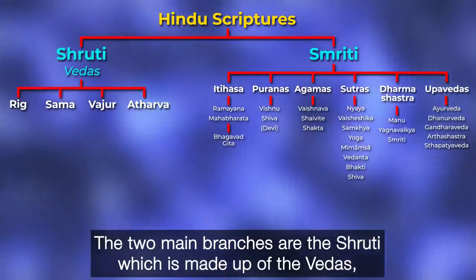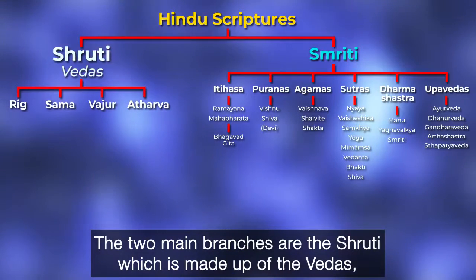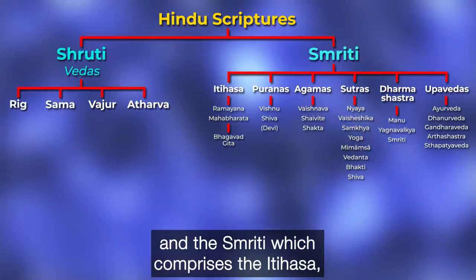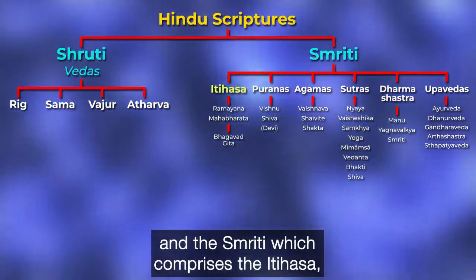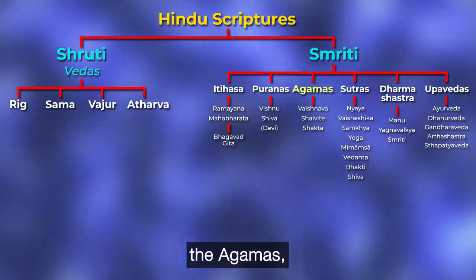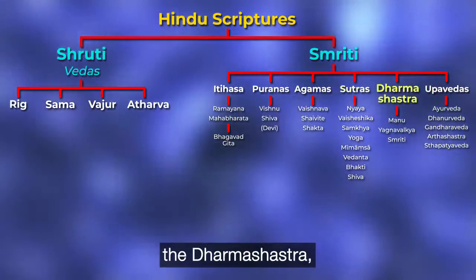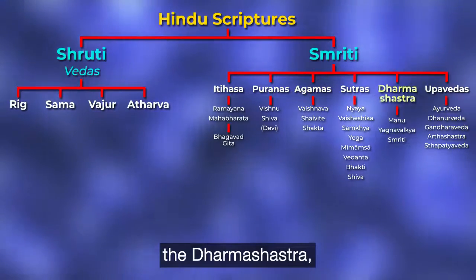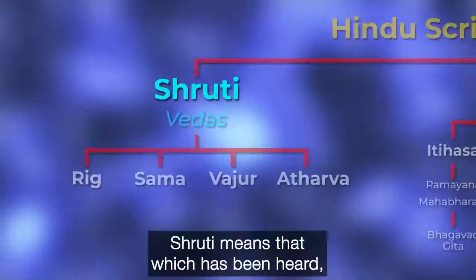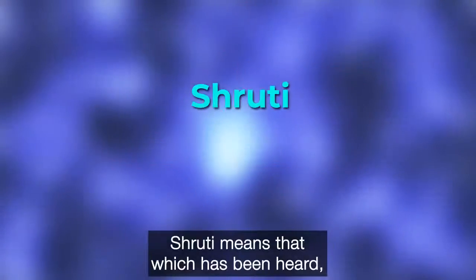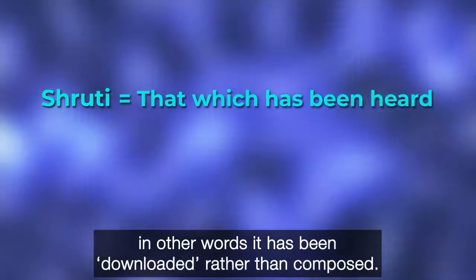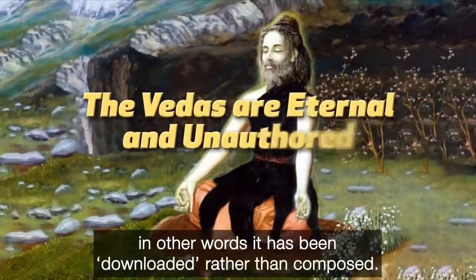The two main branches are the Shruti, which is made up of the Vedas, and the Smriti, which is comprised of the Itihasa, the Puranas, the Agamas, the different Sutras, the Dharma Shastras, and the Upavedas. Shruti means 'that which has been heard' — in other words, it has been downloaded rather than composed.